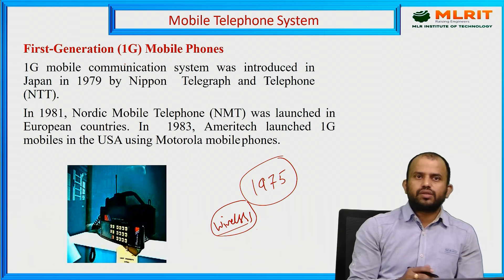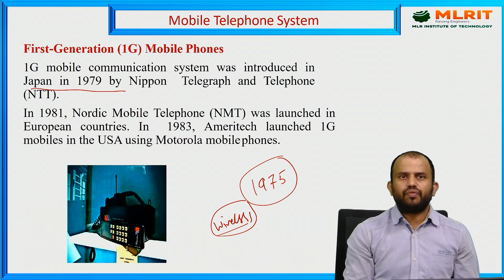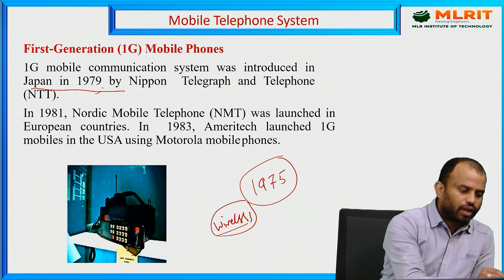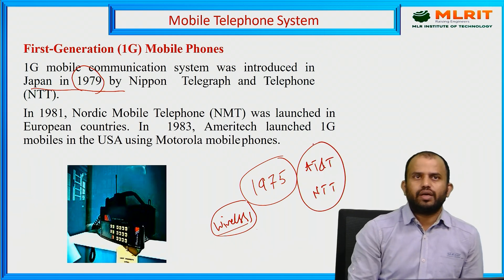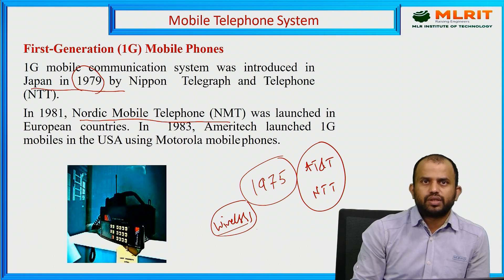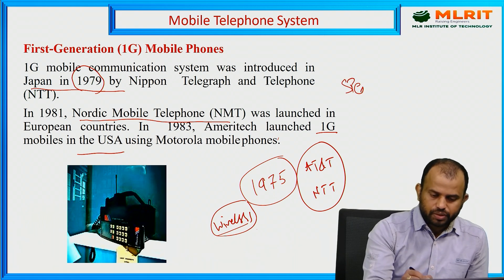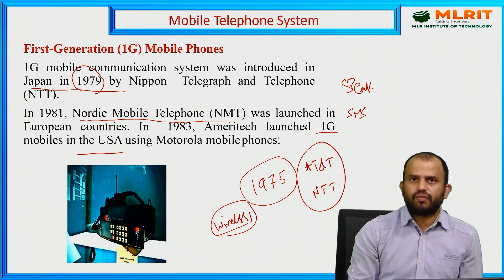The first generation mobile communication system was introduced in 1979 in Japan, developed through AT&T and NTT collaboration. In 1981, the Nordic Mobile Telephone system was launched in European countries, and Ameritech launched the first generation in the USA using Motorola mobile phones. In the first generation, users could make voice calls and send a limited range of SMS messages. However, it used analog communication.